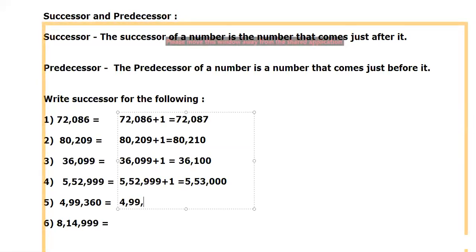4,99,360 plus one equals to, so 360 plus one, what is the next number? After zero, what number will come? Yes, one will come. So 4,99,361.